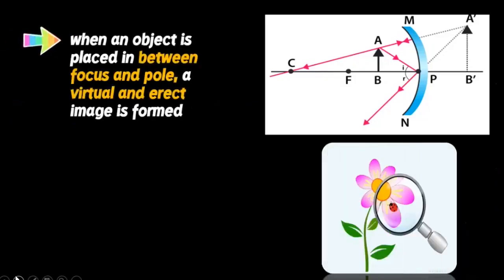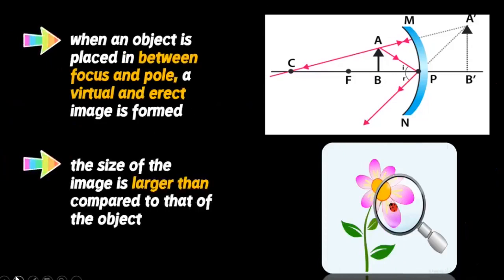When an object is placed between the focus and the pole, a virtual and erect image is formed. The size of the image is larger than compared to that of the object.